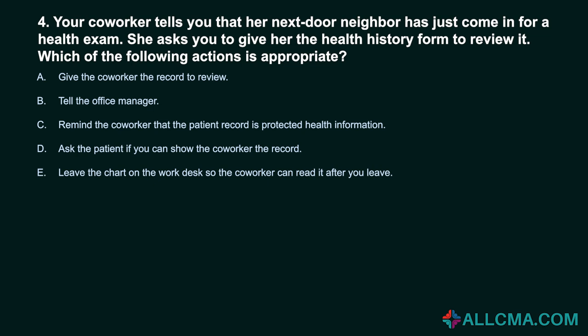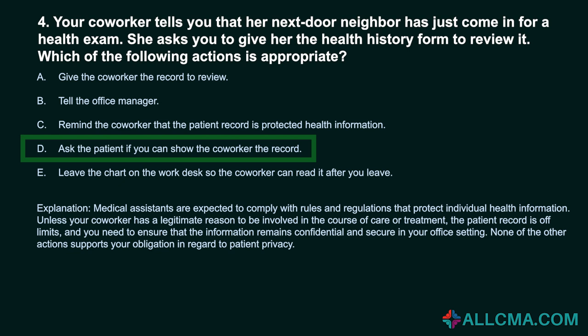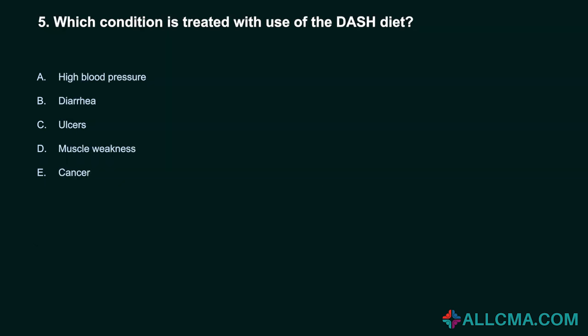Question 4: Your co-worker tells you that her next-door neighbor has just come in for a health exam and asks you to give her the health history form to review. Which action is appropriate? a) give the co-worker the record, b) tell the office manager, c) remind the co-worker that the patient record is protected health information, d) ask the patient if you can show the co-worker the record, e) leave the chart on the desk. Correct answer: D, ask the patient if you can show the co-worker the record. Medical assistants must comply with rules protecting individual health information. Unless the co-worker has a legitimate reason to be involved in care, the patient record is off limits and must remain confidential.